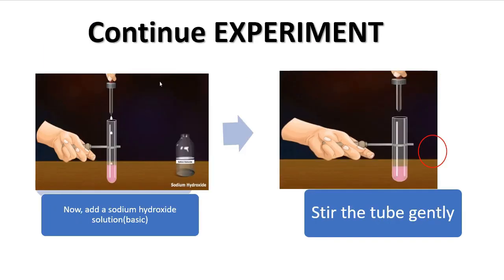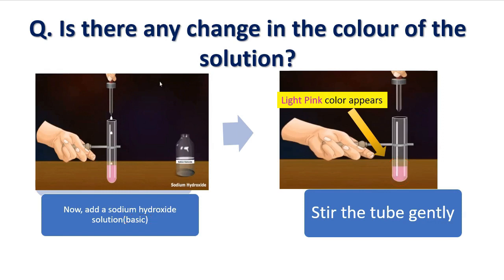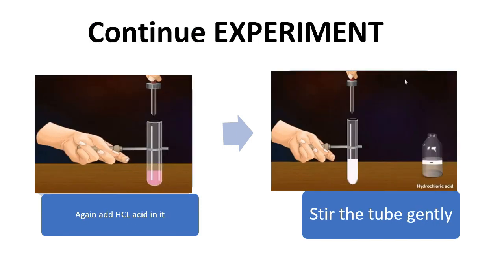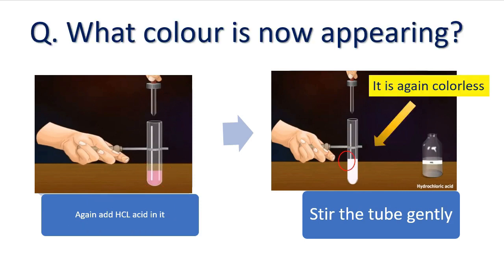Moving forward with the experiment — we will add sodium hydroxide solution, a basic solution, into the test tube and stir it gently. Is there any change in color? Yes! It is now light pink, because we added the basic solution into the acidic and phenolphthalein solution. Now what will we do? We will add HCl acid again and stir gently. What color appears now? There is no color — it is again colorless.